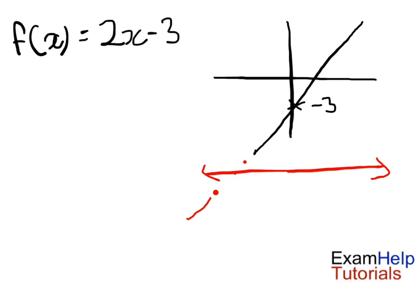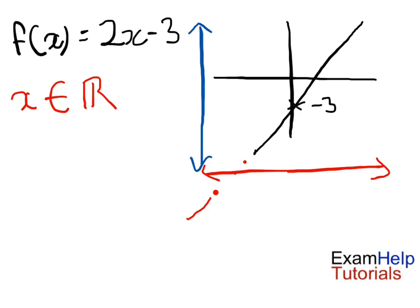Which means the domain is going to be any real number. So we say that our domain x is in the subset of real numbers. And for the range, we can also see that in the y direction it goes on and on in both directions, which means that y, or f of x — the range — is also in the subset of real numbers.